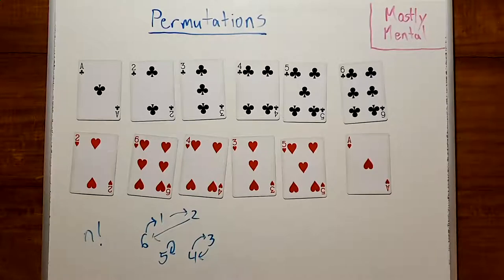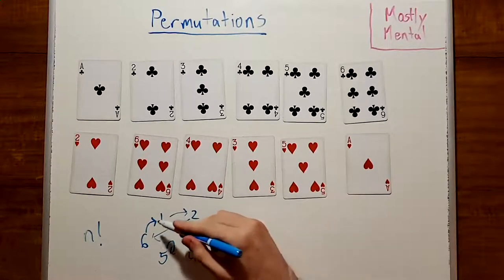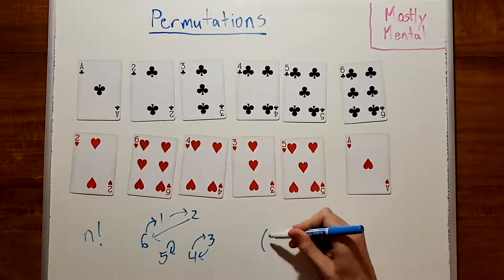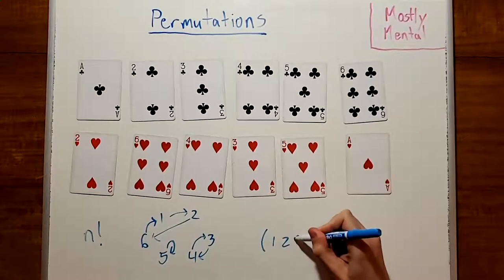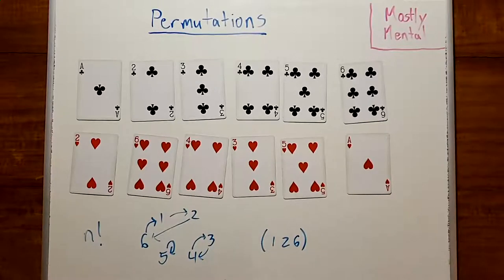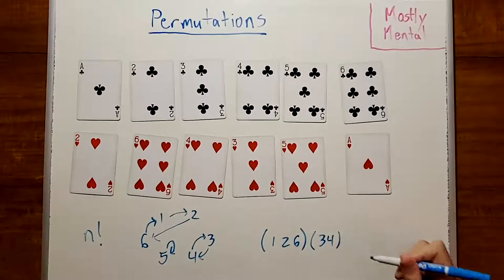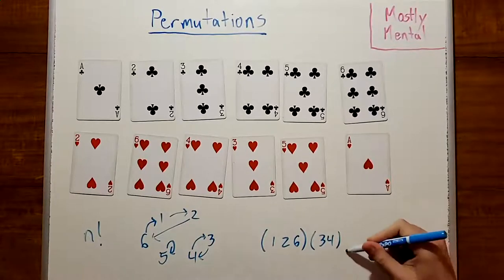If we were to write that in cycle notation, we would say 1 gets replaced with 2 gets replaced with 6, which we write (1, 2, 6) in parentheses. And then we have (3, 4). And finally, we have (5) in its own cycle.